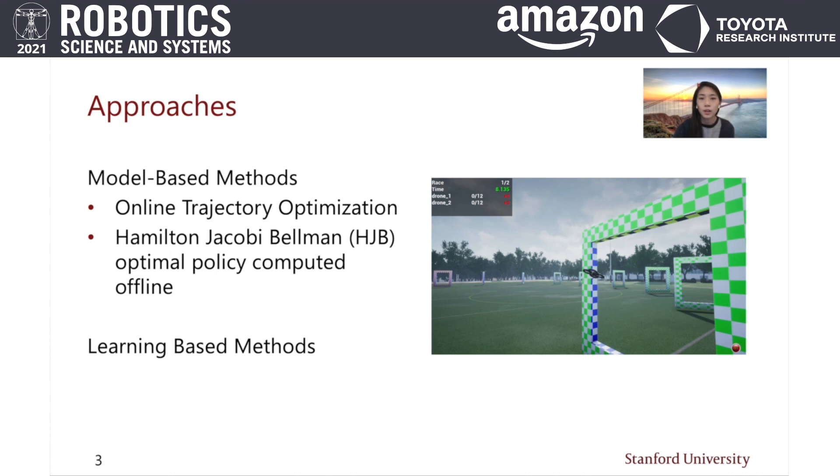Alternatively, there are Hamilton-Jacobi methods of control where computation is done before flight and the resulting solutions are queried in flight. However, these methods can be difficult to apply to robotics problems because the required computation scales exponentially in the state dimension due to the curse of dimensionality.